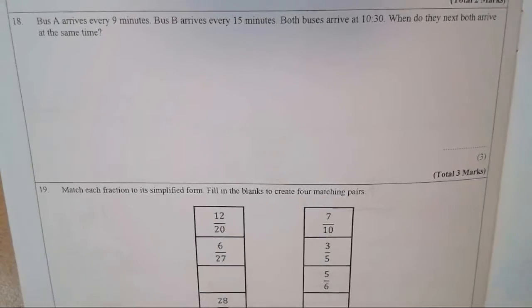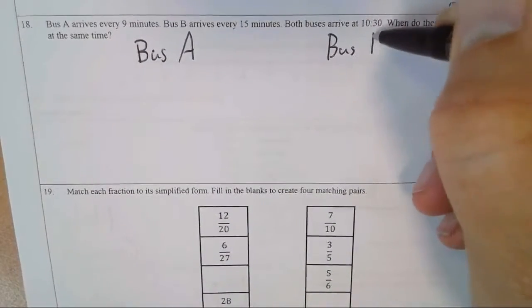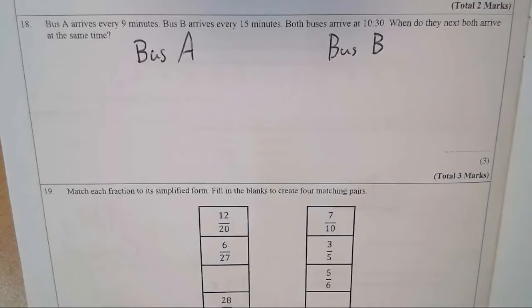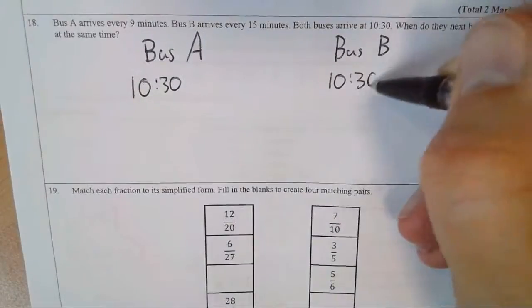This is how I would do it, and this is what I would like to do for a correction. We have Bus A, and then we also have Bus B. Now we know it says in the question that they both arrive at 10:30. So they both arrive here at 10:30.